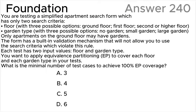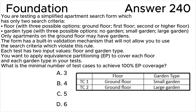According to the ISTQB syllabus, to achieve 100 percent coverage with the equivalence partitioning test design technique, test cases must exercise all identified partitions by covering each partition at least once. Small garden and large garden can only go with ground floor, because only apartments on the ground floor may have gardens. So we need two test cases with ground floor to cover these two garden type partitions.